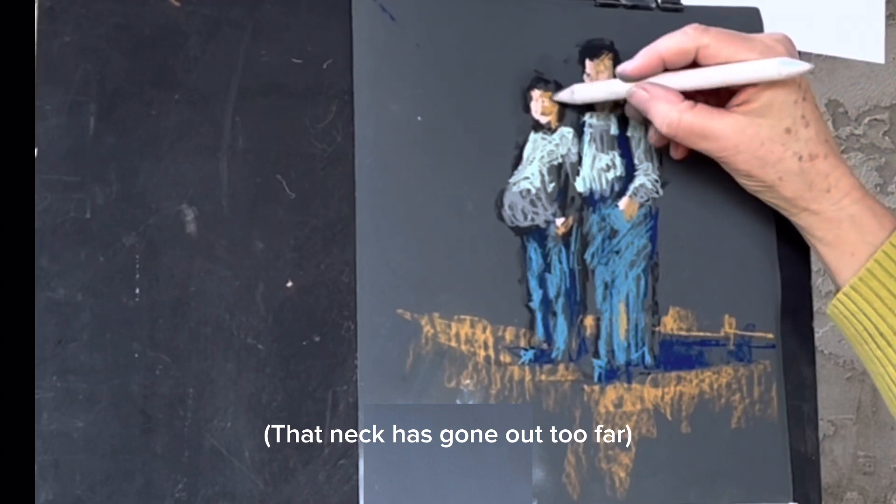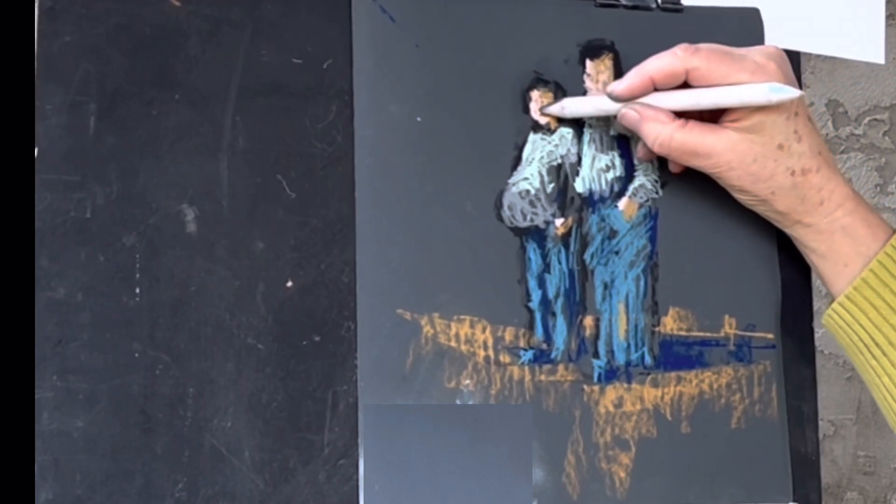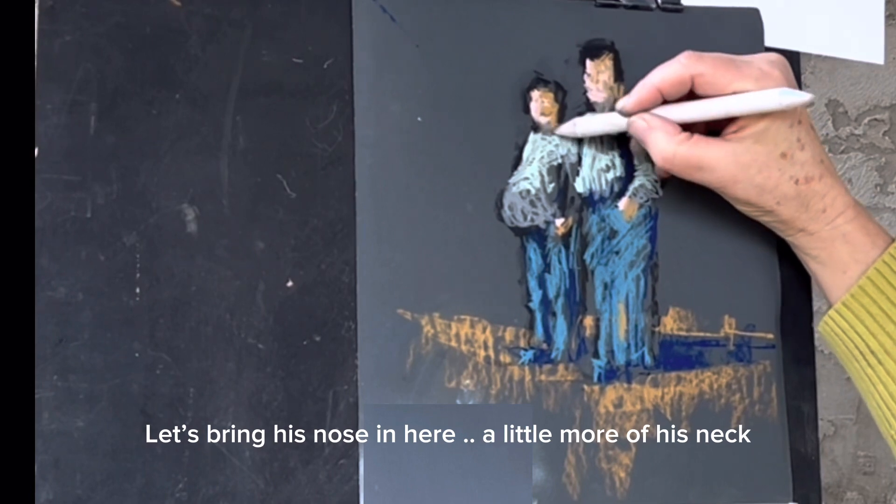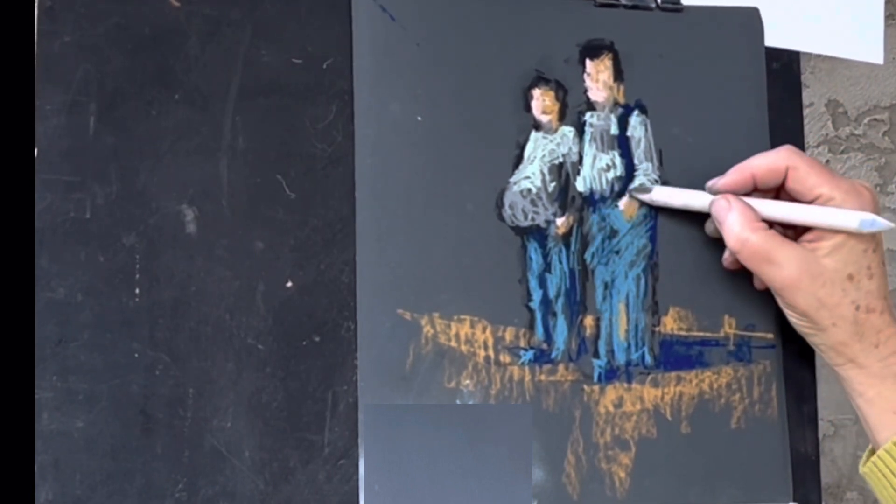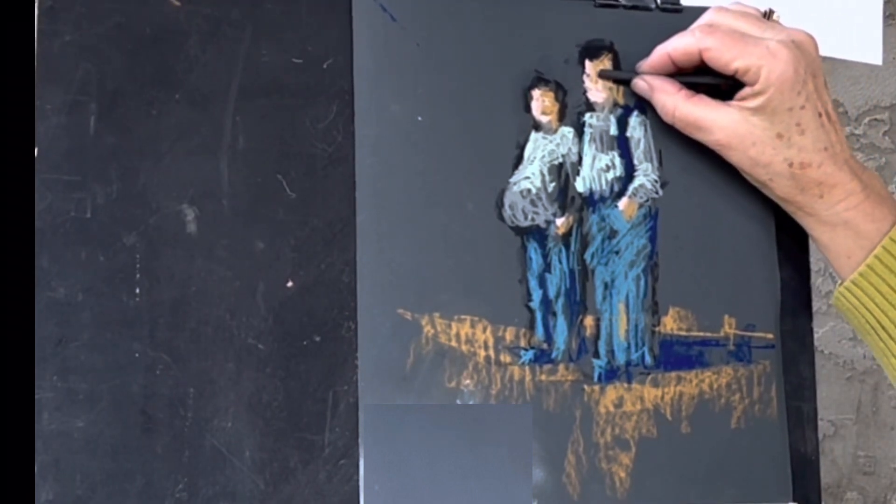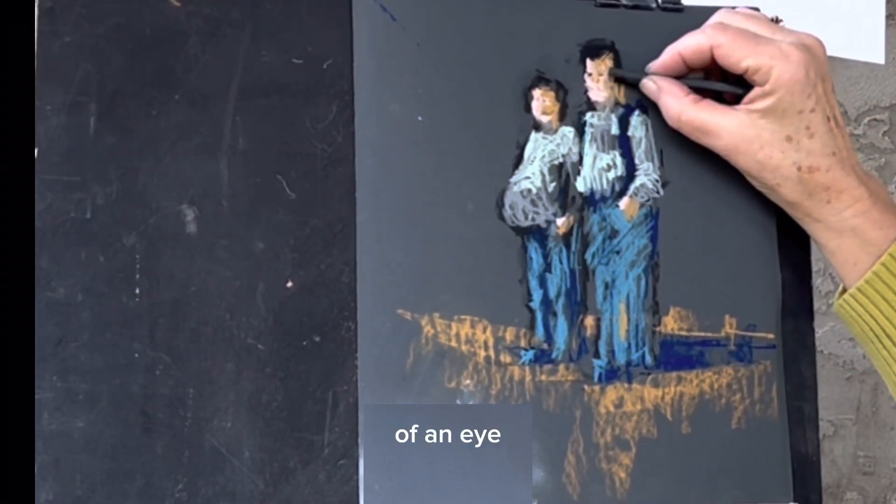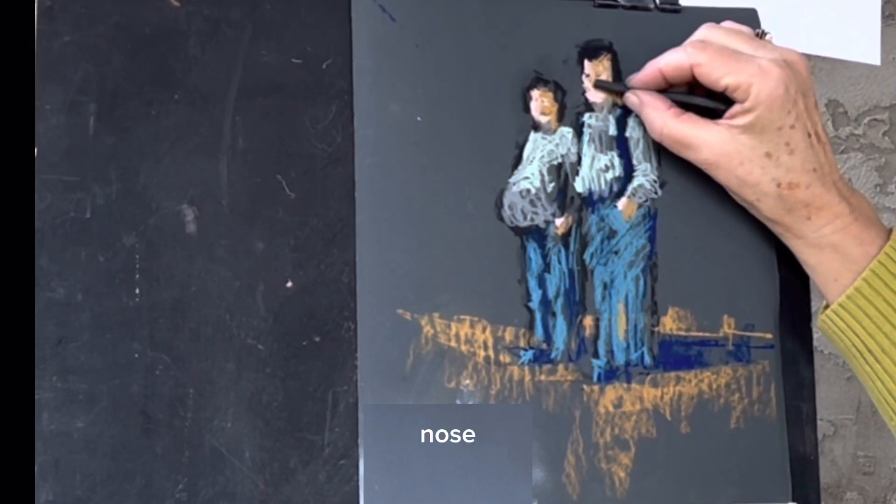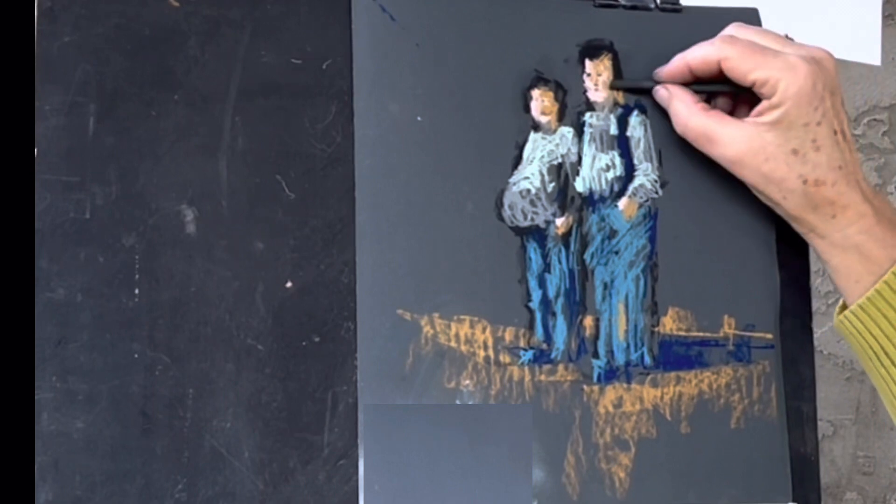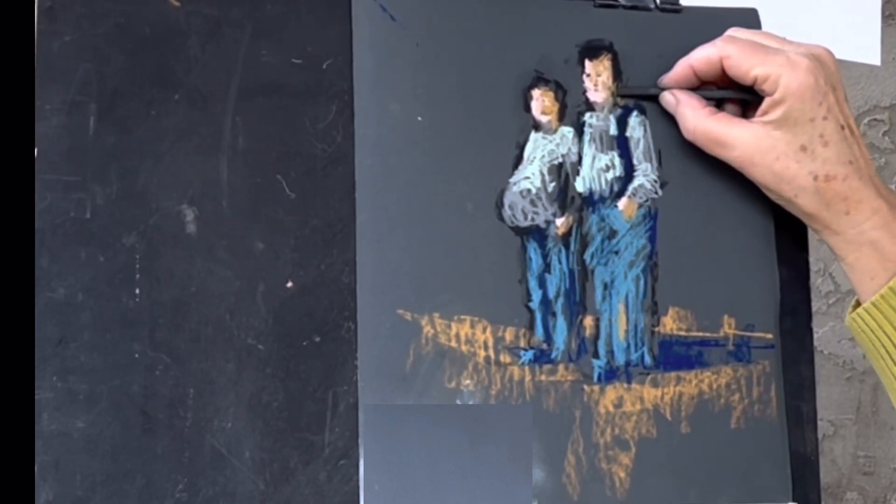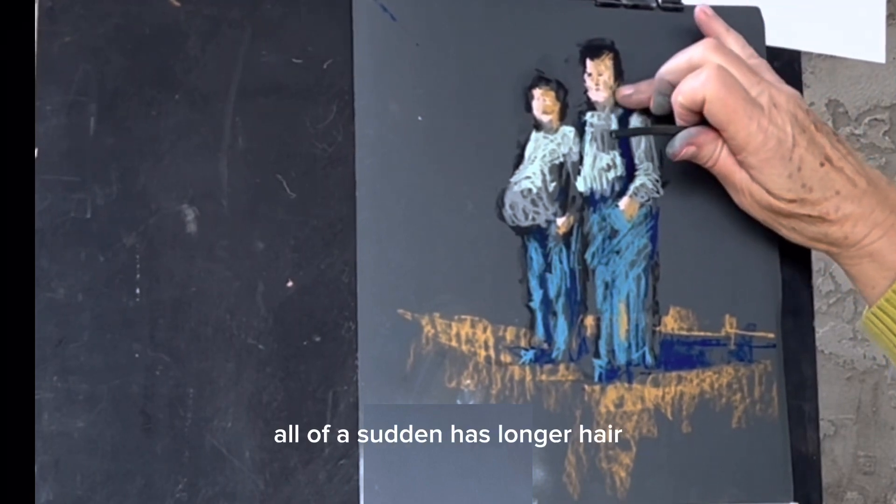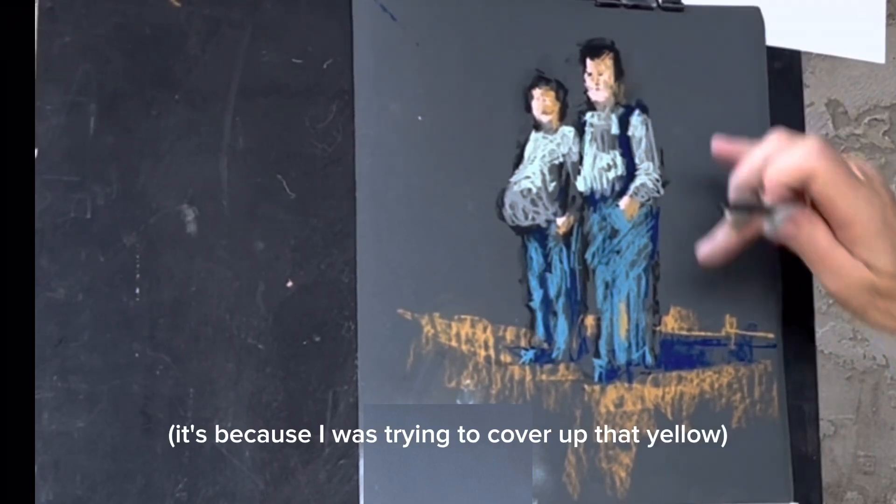Neck has gone out too far. Let's bring his nose in here a little more. A little bit of his neck. Suggestion of an eye. Nose. And a little mouth right there. Don't know why this gentleman all of a sudden has longer hair. It's because I was trying to cover up that yellow.